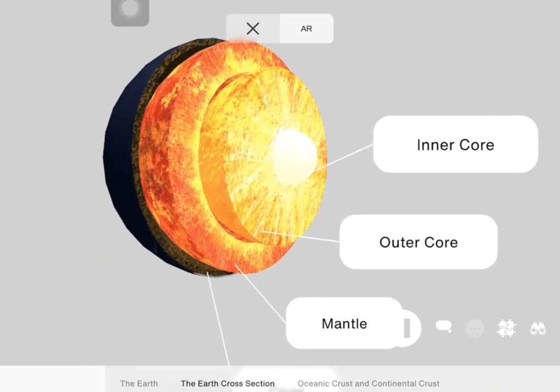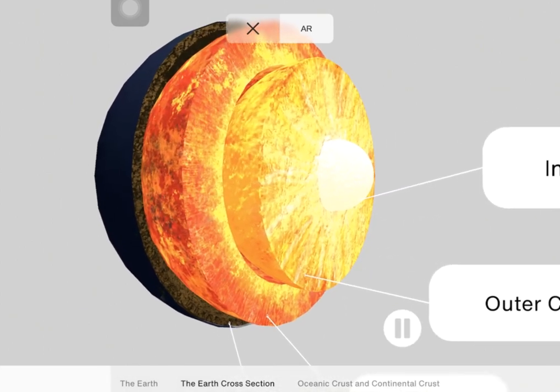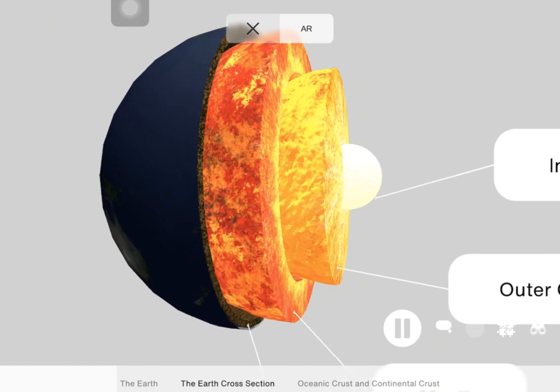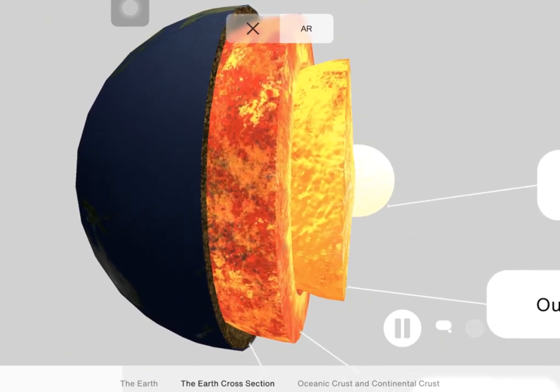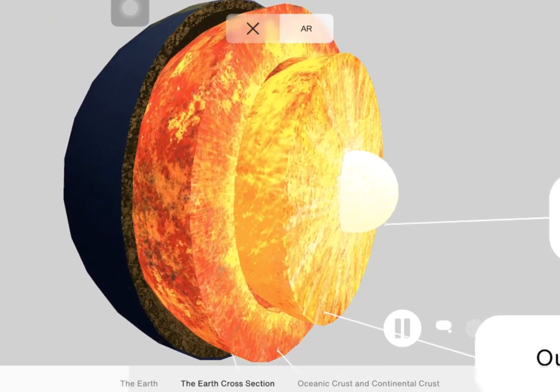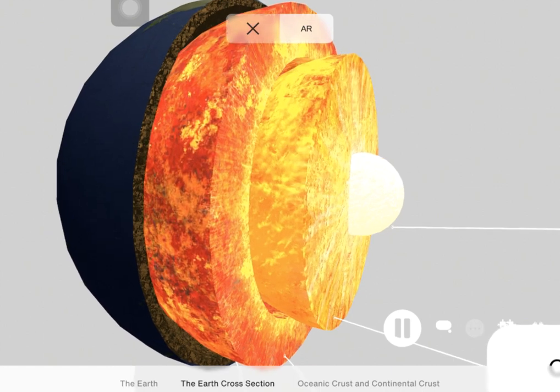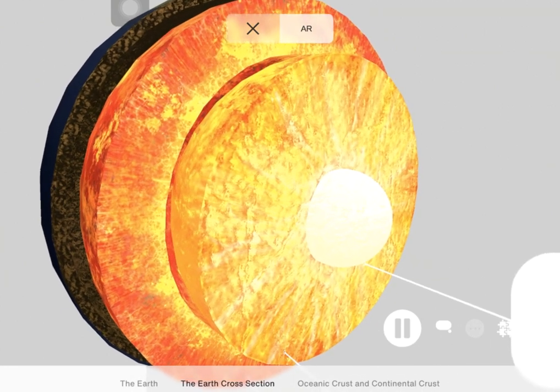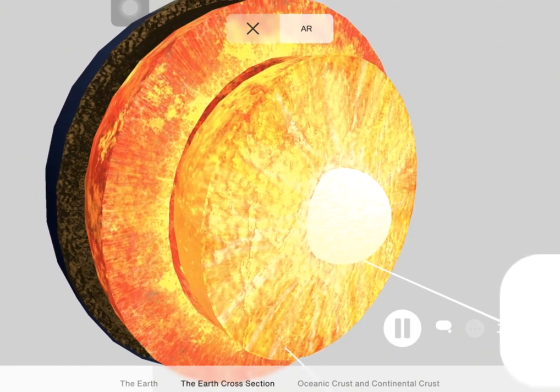Now the crust is of two different types. One is something we call the continental crust, which basically means under the land, while the other is the oceanic crust, under the ocean. The continental crust is thicker, and the oceanic crust is a lot thinner. Now the thickness can vary anywhere between 5 to 80 kilometers.